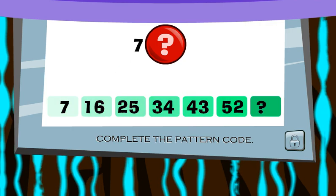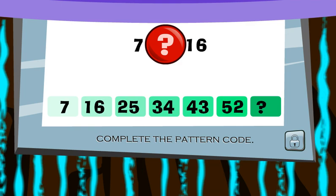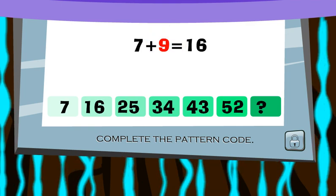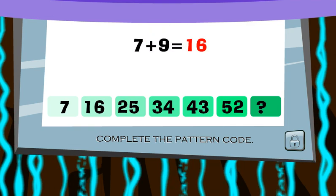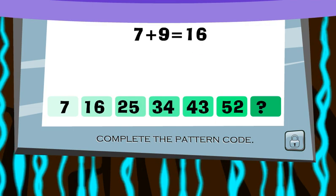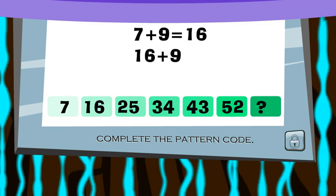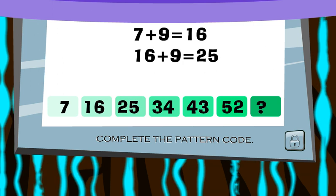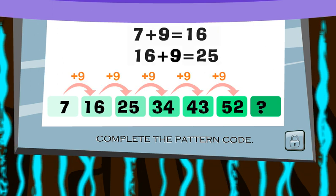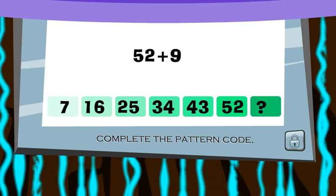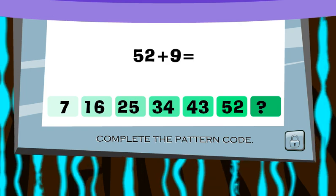What do you do to 7 to get to 16? You need to add 9 to 7 to get to 16. Check again. 16 plus 9 is equal to 25. Yes. This is the pattern rule. Add 9 to 52. You will get 61.